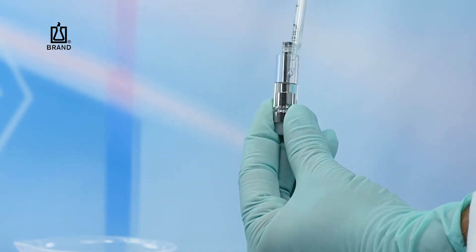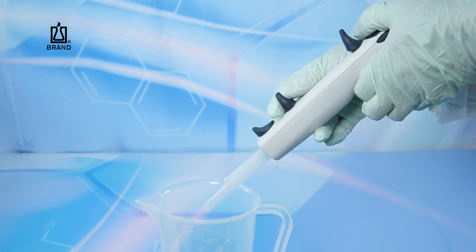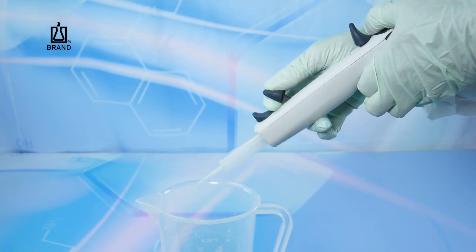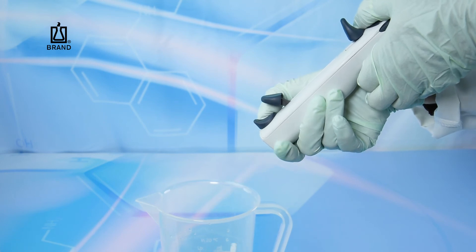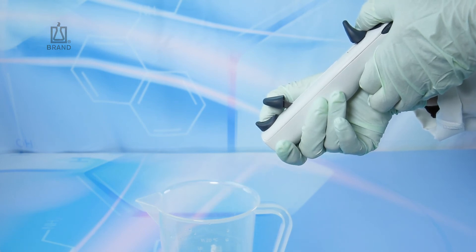Once you have completed the dispensing, the PD tip should be removed. Push the locking filling lever to the lower position and swing out the lever into the unlocked position, then push the ejection button to discard the PD tip.